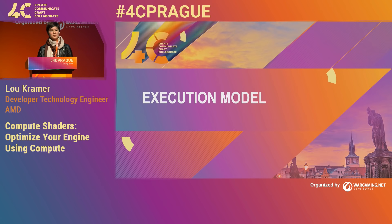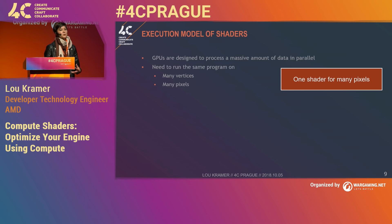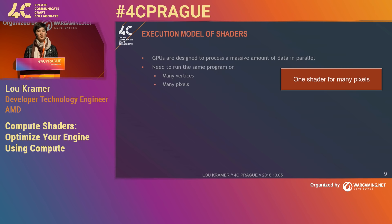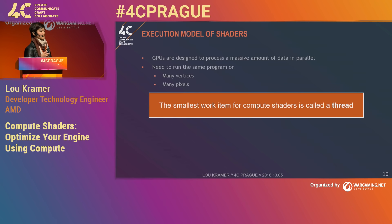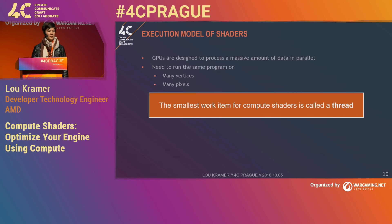How are shaders actually executed on the GPU? It's important to understand how GPUs are designed — GPUs are designed to process a massive amount of data in parallel. Typical use cases are running the same program on many vertices and many pixels. In compute shaders, we call the smallest work item a thread — don't confuse it with CPU threads. For vertex shaders the smallest work item is a vertex; for pixel shaders it's a pixel; for compute shaders we call the smallest work item a thread.